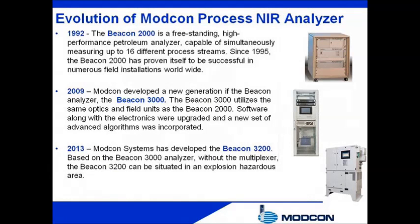The first Beacon NIR analyzer, the Beacon 2000, was successfully launched in 1992 as a specialty NIR analyzer dedicated to the petroleum industries. Since then, many more analyzers have been installed in numerous refineries worldwide. The first generation included the analyzer and an external optical multiplexer, with the capability to measure accurately and almost simultaneously physical properties in up to 16 different process streams allocated at a distance of up to 2 miles from the analyzer. In 2009, ModCon acquired PetroMetrics and developed the new generation: the Beacon 3000. In 2013, ModCon developed the Beacon 3200, a reduced but similar version of the Beacon 3000.